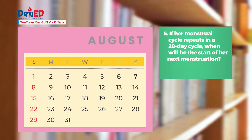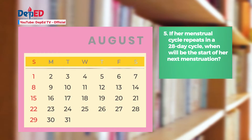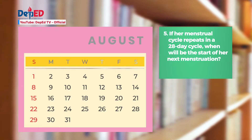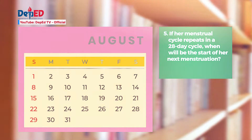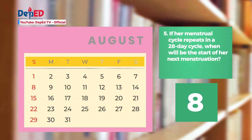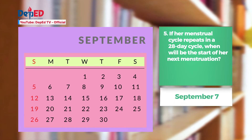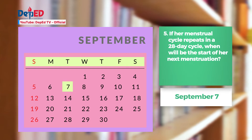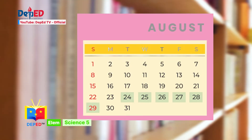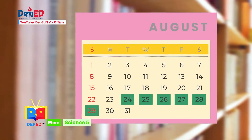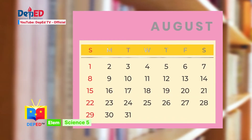For our last question: If her menstrual cycle repeats in a 28-day cycle, when will be the start of her next menstruation? The correct answer is September 7. Good job, five stars! To be reminded about the occurrence of menstruation, counting the days is important.